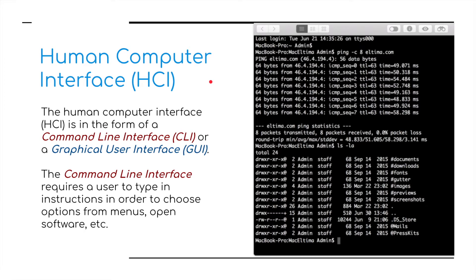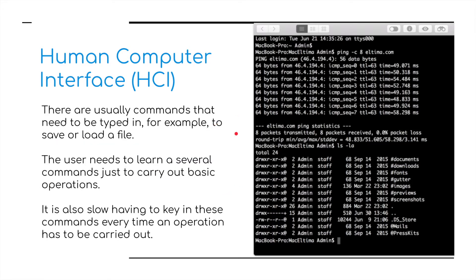We're going to break the human computer interface down into two parts. We either have a command line interface — CLI — or a graphic user interface, the one you're probably more familiar with. The command line interface requires a user to type in instructions in order to choose options from menus and open software. There are usually commands that need to be typed in, for example to save or load a file. The user needs to learn several commands just to carry out basic operations, and it is also slow having to key in these commands every time an operation has to be carried out.